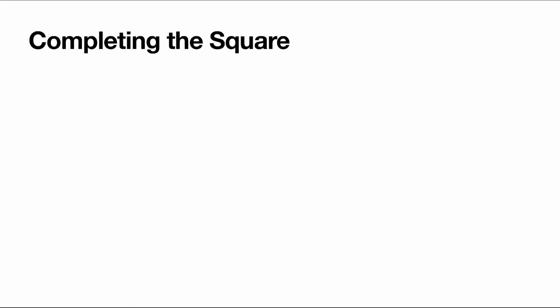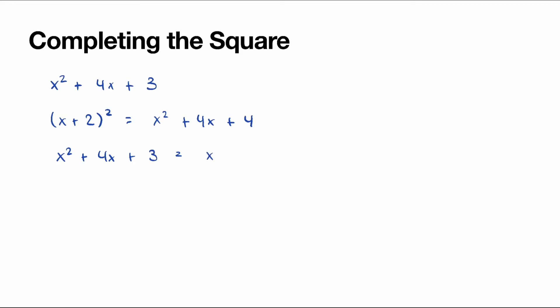For example, we have the quadratic x² + 4x + 3. We have to find a perfect square that contains 4x. The perfect square that contains 4x is (x + 2)², which expands to give us x² + 4x + 4. So this means we can write x² + 4x + 3 as x² + 4x + 4, and then take away 1. Since we can write x² + 4x + 4 as (x + 2)², we have (x + 2)² − 1, which is in the completed square form.